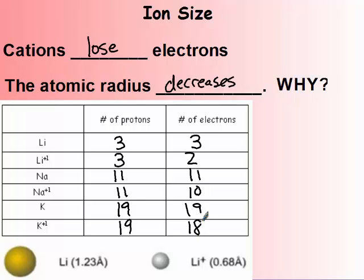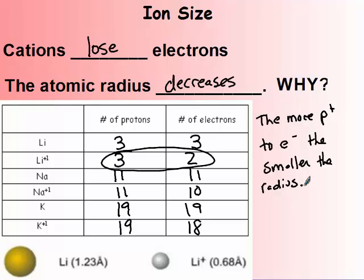Notice that when a cation loses an electron, it now has more protons than electrons, pulling those electrons in, making it smaller. So the more protons to electrons, the smaller the radius is going to become.